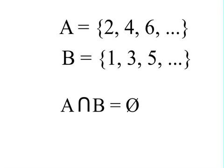But when you take the intersection of odd numbers and even numbers, they have nothing in common. So we say the intersection set is empty. That symbol is called the empty set symbol, and we say that the intersection of even numbers and odd numbers is the empty set.